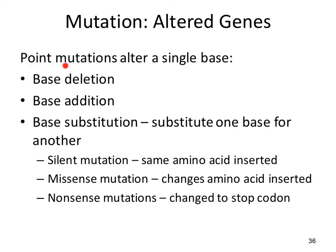We're going to look at point mutations, which are changes in a single nucleotide base. One base can be deleted, one base added, or one base substituted for a different base. In the case of base substitution, there are three types: a silent mutation, where the same amino acid is coded for; missense, where you change the amino acid coded for; and nonsense, where instead of coding for an amino acid, you now code for a stop codon.